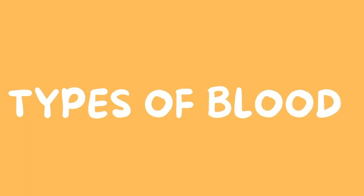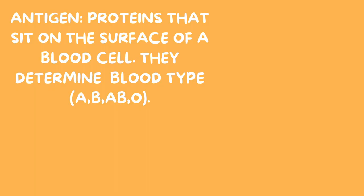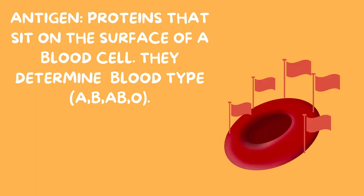Finishing off with our last topic: blood types. First and foremost, we must understand two important vocabulary words associated with blood types. The first word is antigen. Antigens are proteins that rest on the surface of our red blood cells, and they are what determine our blood type. I'm going to represent antigens with flags, because antigens are basically what the blood is representing.